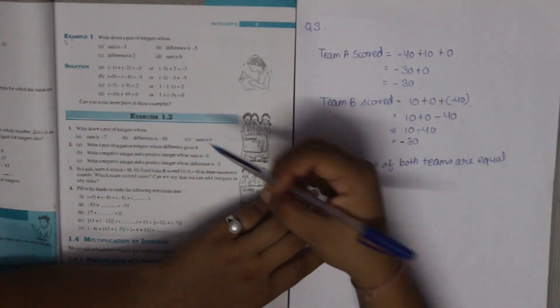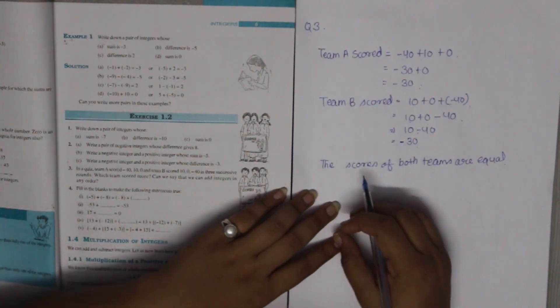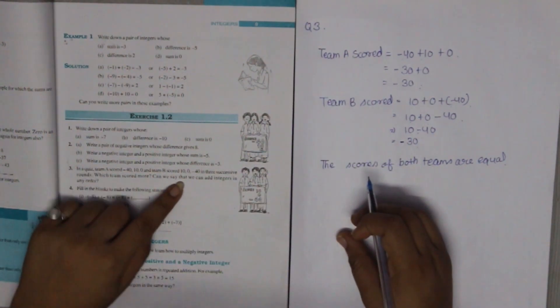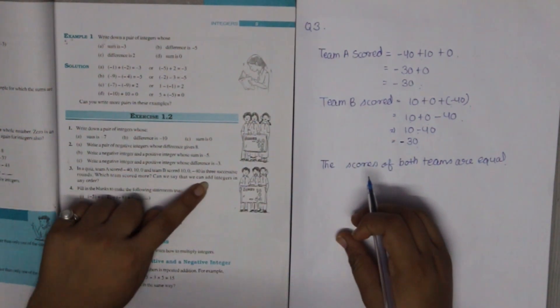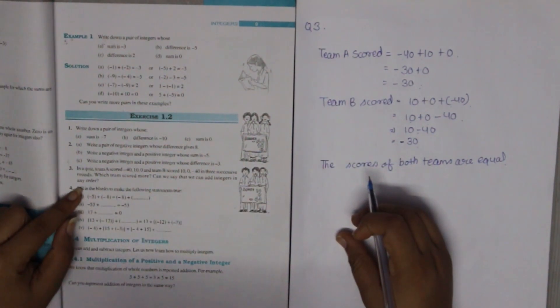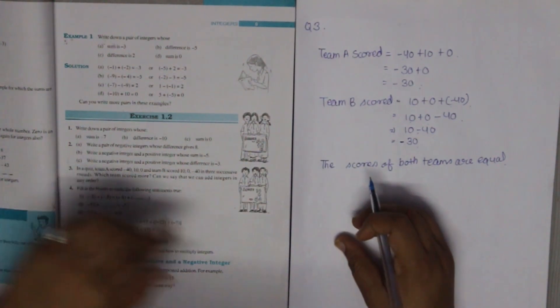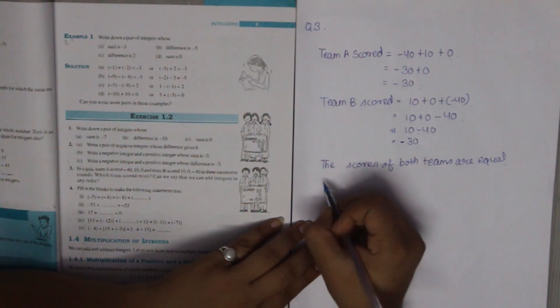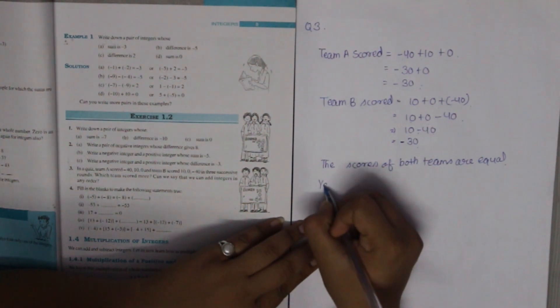The second part of the question asks: can we add integers in any order? The answer is yes — we can add numbers in any order.